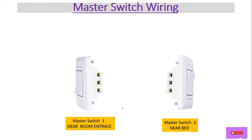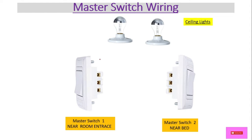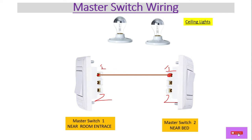Now let's do the wiring. Suppose we have all ceiling lights in the room — here we consider two lights, though you can have more. We connect a wire to one terminal and this wire goes to the first terminal of the other two-way switch similarly in parallel. Again, we take a wire and connect them to each other, so both upper and lower contacts are connected in parallel.